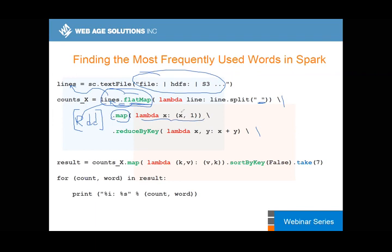We continue by applying another transformation: map would apply to the RDD which is the result of the previous flatMap transformation. We've got an RDD in memory — not visible to us — and map would apply another lambda. X would be a word in that text, and the value 1 is the way MapReduce works: you associate every word as a tuple where each keyword is associated with 1.